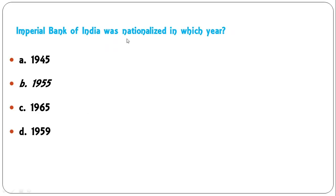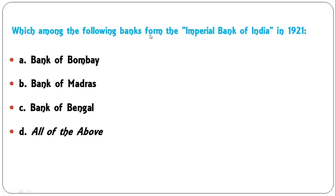Imperial Bank of India was nationalized in which year — 1945, 1955, 1965, or 1959? Imperial Bank was nationalized in 1955 and renamed as the State Bank of India. So don't get confused — Imperial Bank of India was nationalized in 1955 and renamed as the State Bank of India.